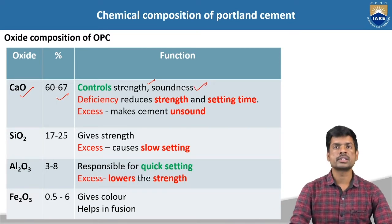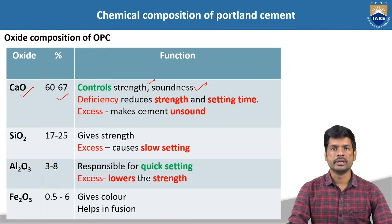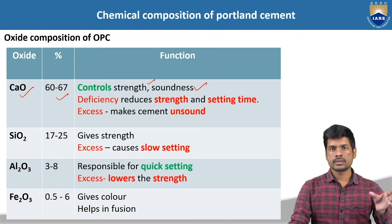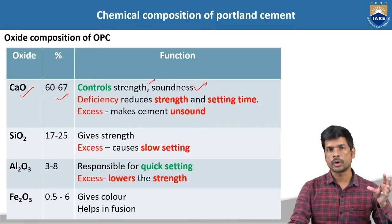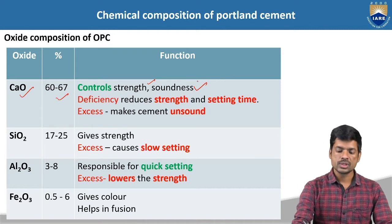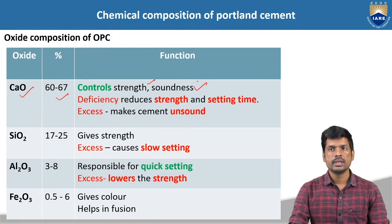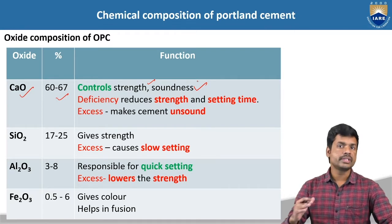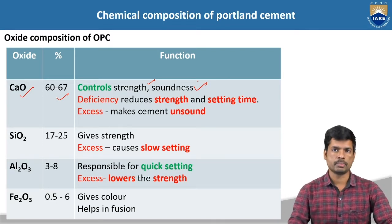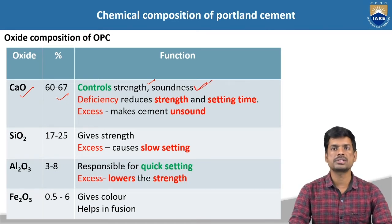And next, soundness. Soundness represents the condition of the particular material — whether the cement is sound, meaning whether the properties of cement are good or not. The soundness will be represented by using the expansion of cement. If it is going to expand more, then we are going to get some cracks, and we are going to call that particular cement unsound. That particular property, soundness, will be controlled by using calcium oxide.